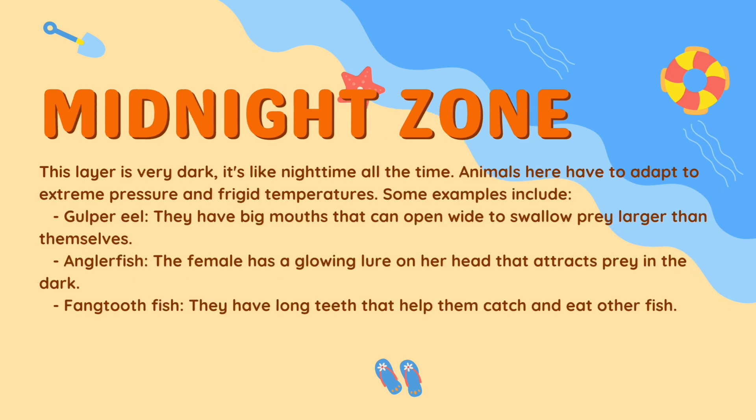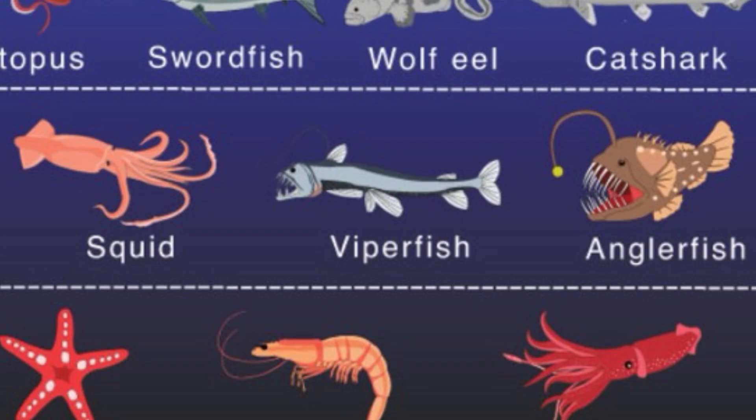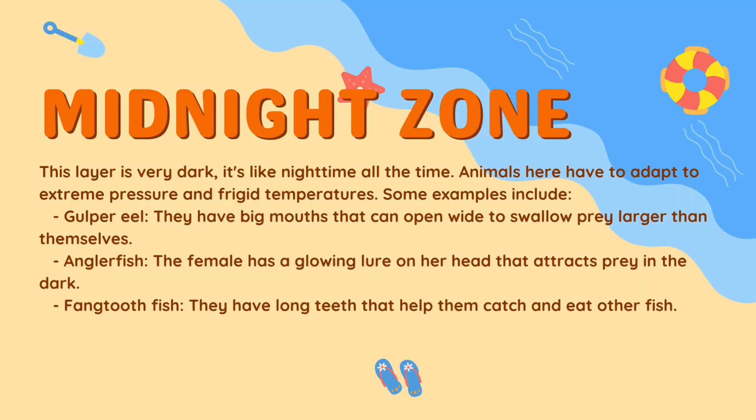In the midnight zone it's very dark — like nighttime all the time. Animals here have to adapt to extreme pressure and frigid temperatures. Examples include the gulper eel, which has a big mouth that can open wide to swallow prey larger than itself; the anglerfish, whose female has a glowing lure on her head to attract prey in the dark; and the fangtooth fish, which has long teeth that help it catch other fish.